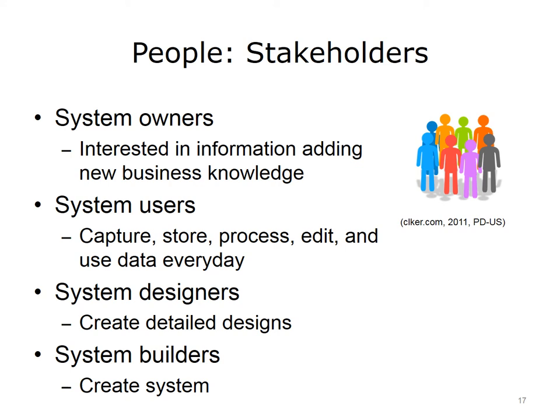Stakeholders are the people who have an interest in an information system, whether the system is existing or proposed. Stakeholders include technical and non-technical workers. Each stakeholder group has a different perspective of the same information system. The success of a project is in direct proportion to the active participation of the different stakeholders. System owners are high-level executives or managers who are interested in information that adds new business knowledge. Their primary role in a systems development project should be to define the scope and vision for the project. As the project sponsor, they need to supply clear requirements and expected project outcomes to the development team. They will approve the formal requirements and determine acceptance of the system.